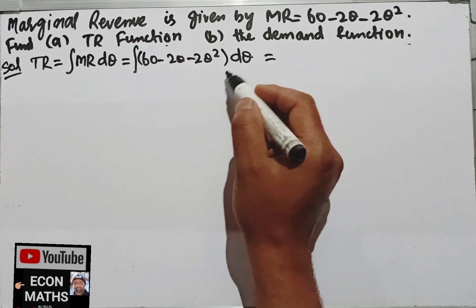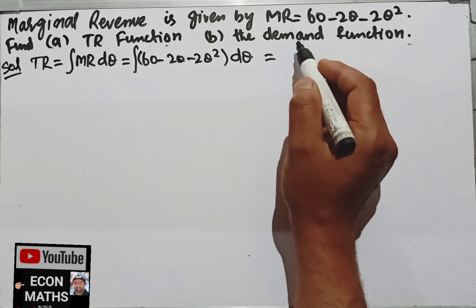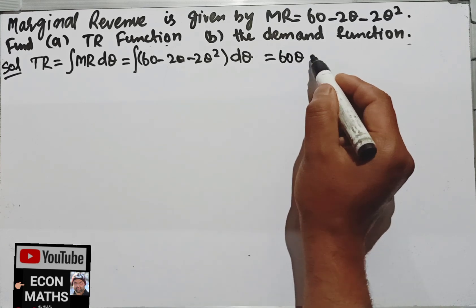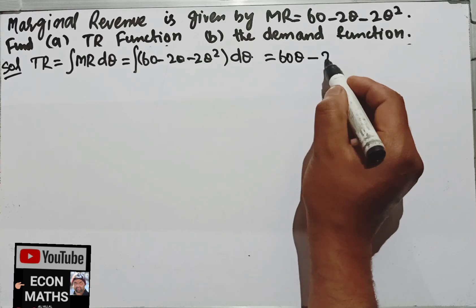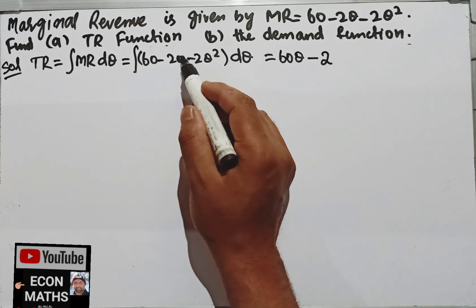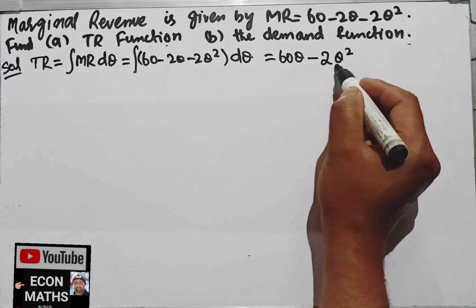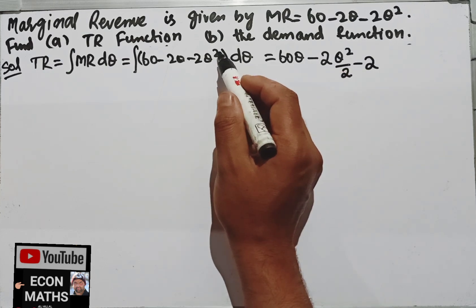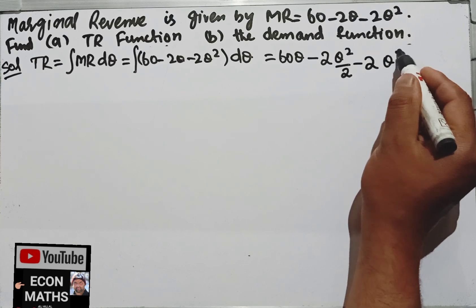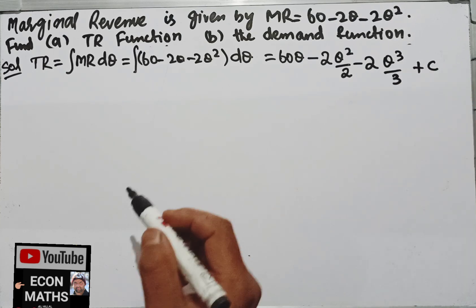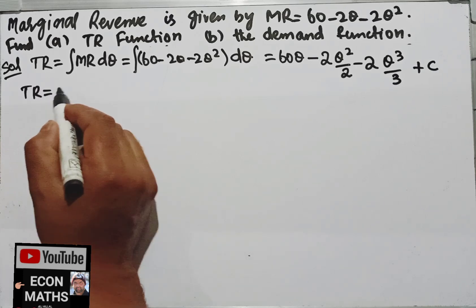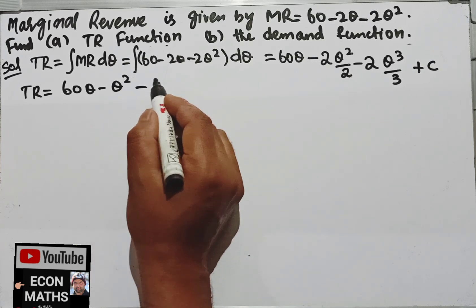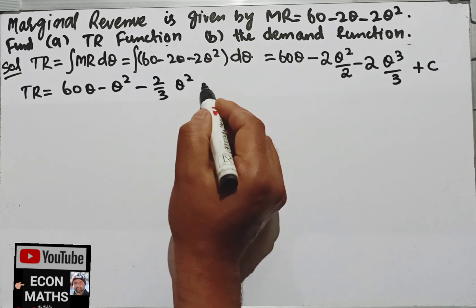The integration of 60 will be 60Q, because we are integrating with respect to Q. Using the rules of integration: the integration of Q is Q squared divided by 2, and the integration of Q squared is Q cubed divided by 3, plus the constant of integration. Therefore, total revenue equals 60Q minus Q squared minus 2/3 Q cubed plus C.